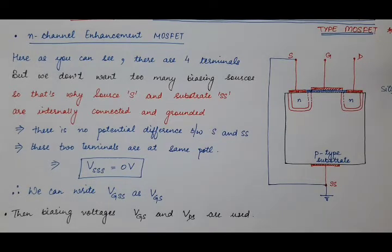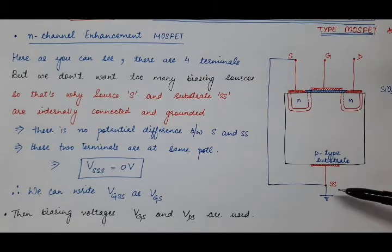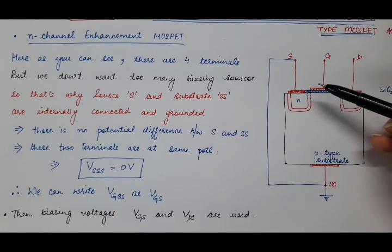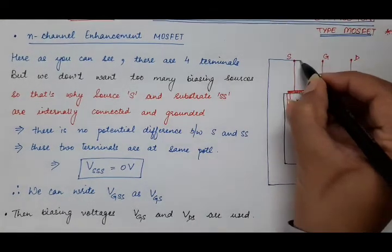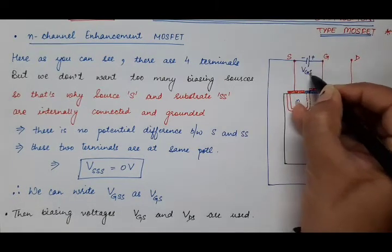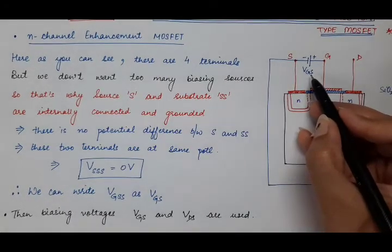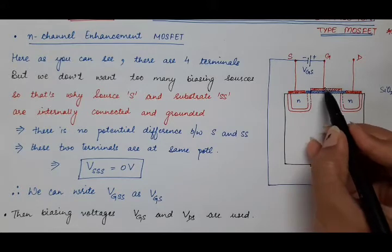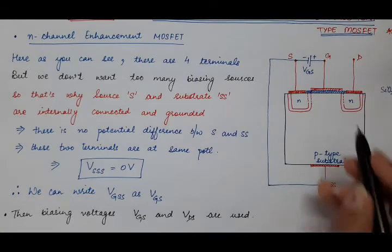As discussed in our previous lecture, the gate is made more positive with respect to the substrate. Since the substrate and source are at the same potential, we will make the gate more positive with respect to the source terminal. We apply a biasing voltage here, making the gate more positive with respect to the source. Because of this biasing voltage, positive charge will start accumulating over the gate terminal, and this will attract negative charge — minority carriers, electrons — in the case of a P-type substrate towards it.